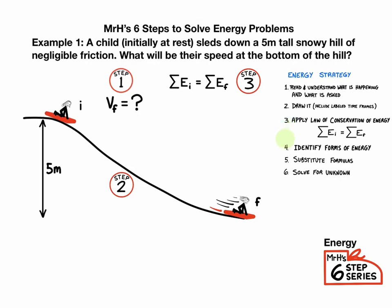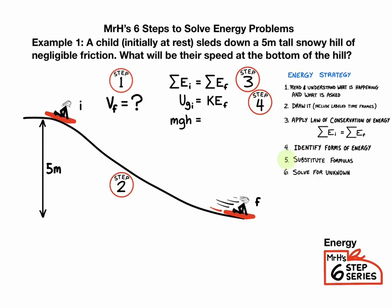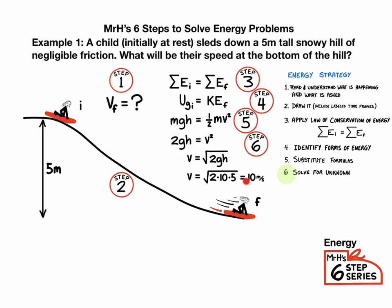Step four is to identify forms of energy. What kind of energy did we have at the beginning? That looks like potential energy due to gravity. What kind of energy did we have at the end? That looks like kinetic energy — no potential energy, so just kinetic energy final. Step five: substitute formulas. Potential energy is MGH, kinetic energy is one-half MV squared. Step six is to solve for the unknown. We were looking for final velocity V, and we get final velocity equal to 10 meters per second.